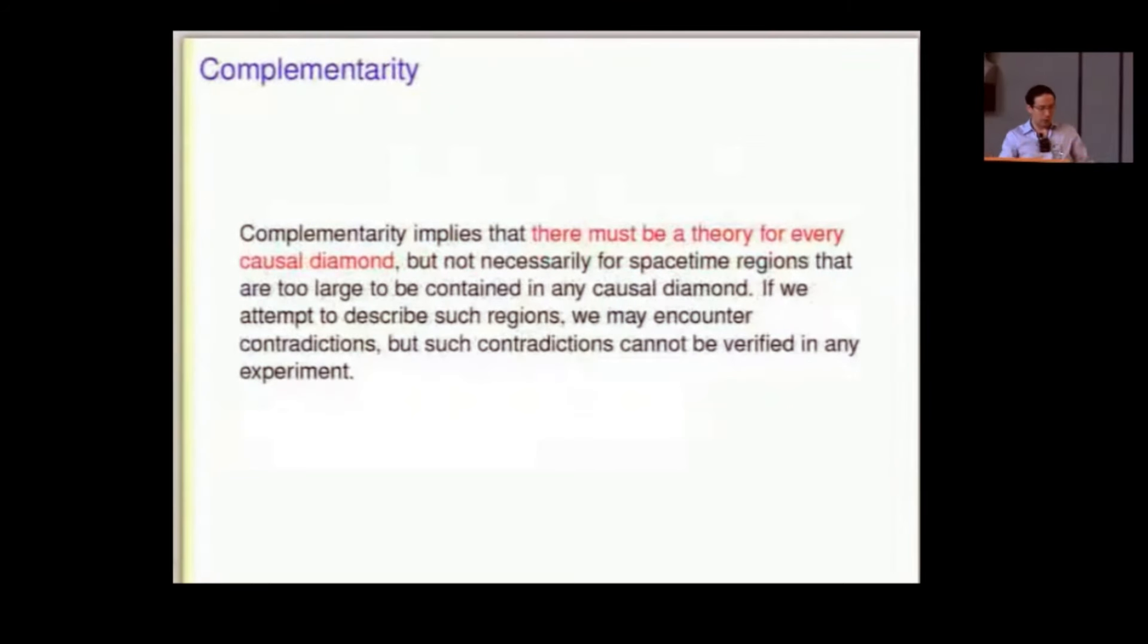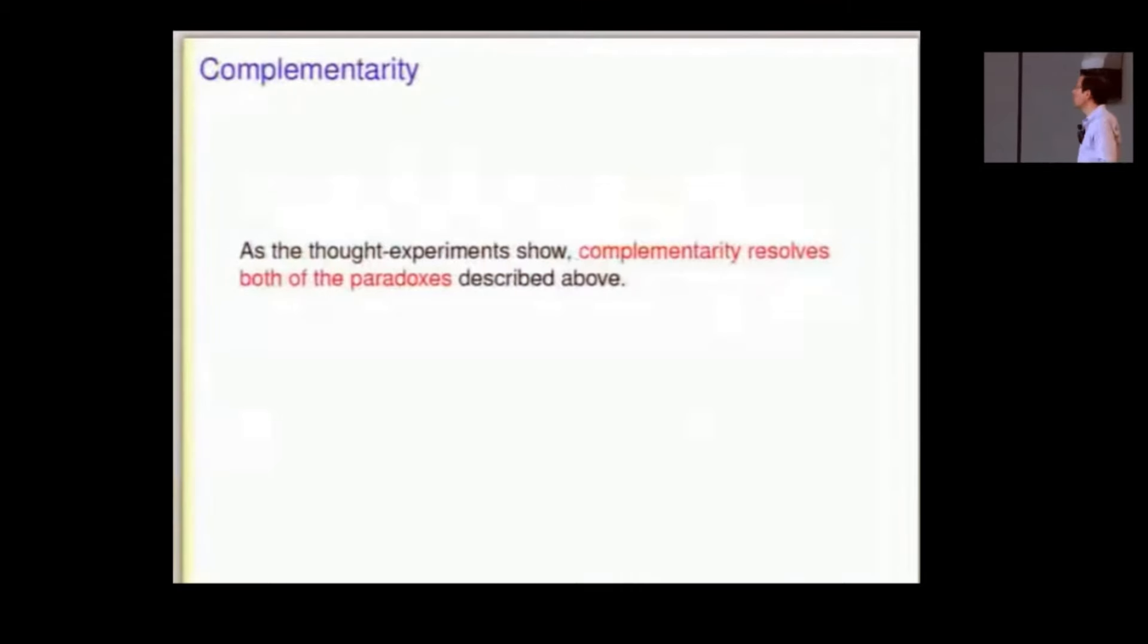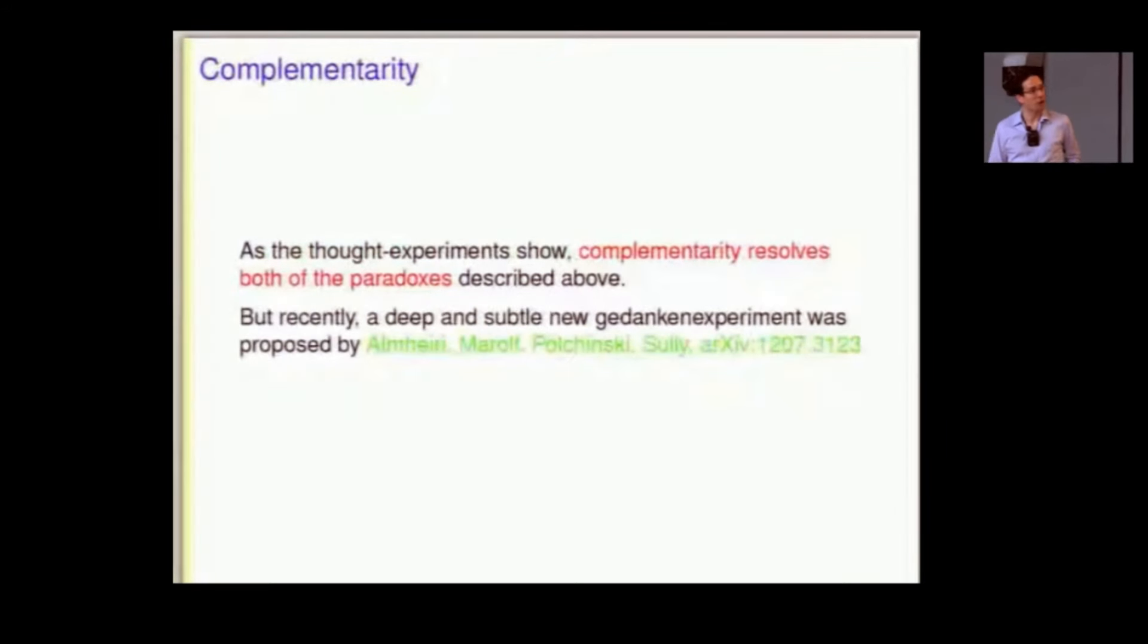So if you have a contradiction between different causal diamonds, Alice says that the information is inside the black hole, Bob says it's in the Hawking radiation. Too bad, they can't argue with each other. The important thing is that each one of them has a consistent description with no obvious intrinsic conflicts. And as the thought experiments that I showed demonstrate, complementarity resolves the apparent paradoxes that people exhibited, had exhibited until about two weeks ago.